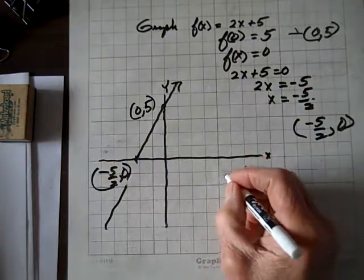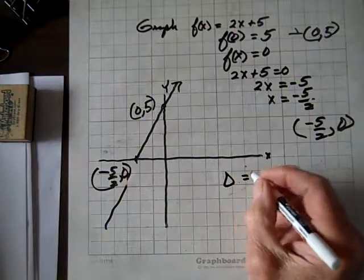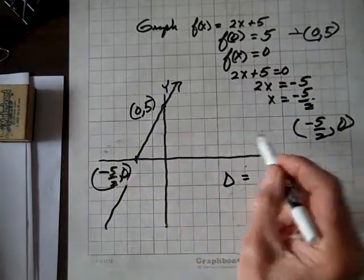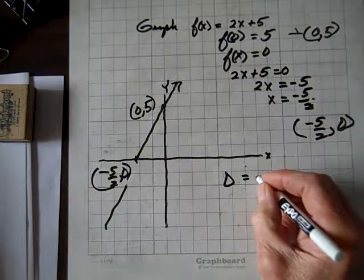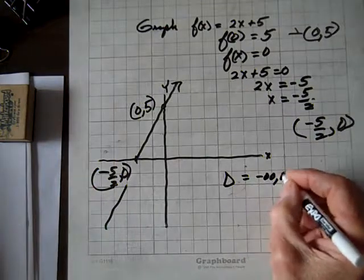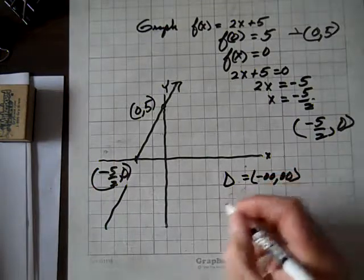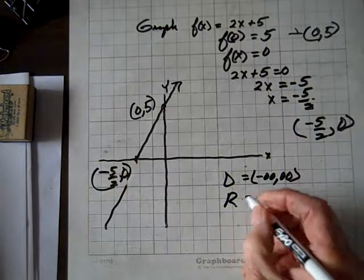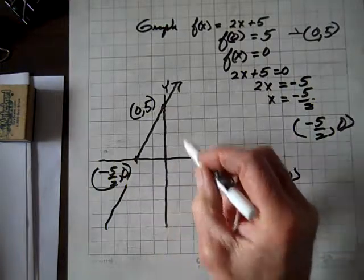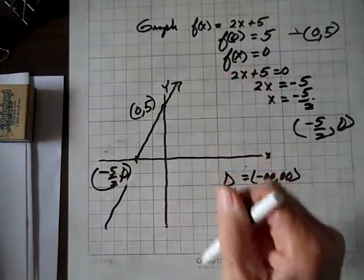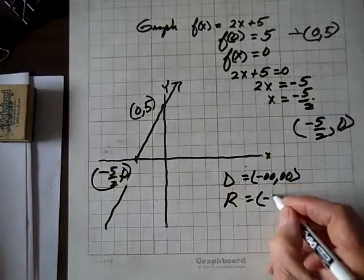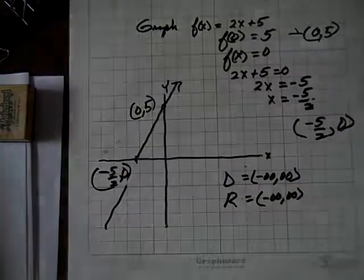By the way, the domain for this is all reals because its horizontal components go either way forever, negative infinity to infinity. And the range is also all reals because its vertical components go up forever and down forever. Okay, done.